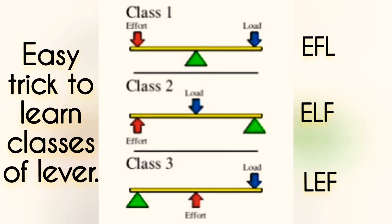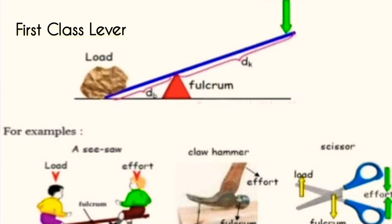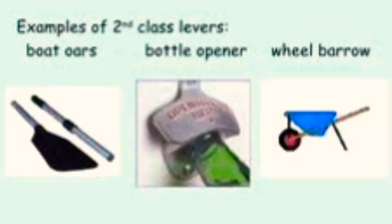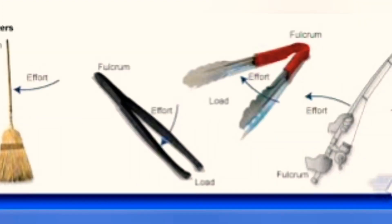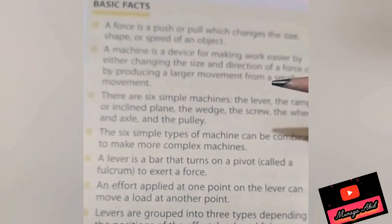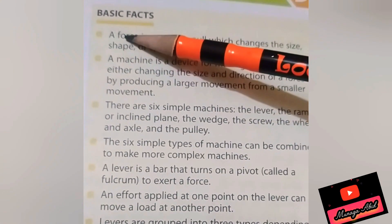First class lever examples are seesaw, claw hammers, and scissors. Second class lever examples are oar, doors, bottle opener, and wheelbarrow. Third class lever examples include fishing rod, tongs, and mop.